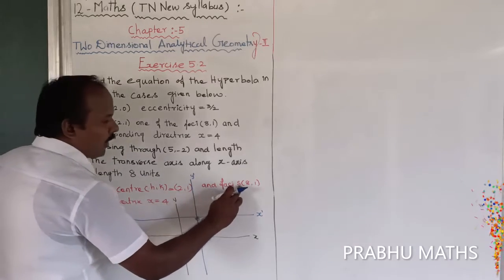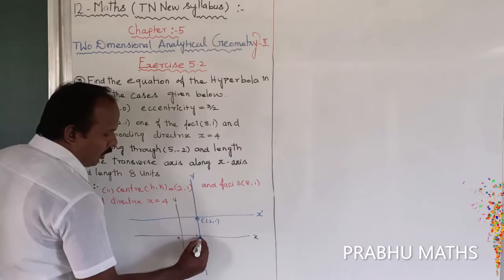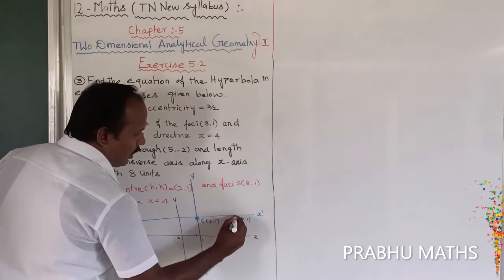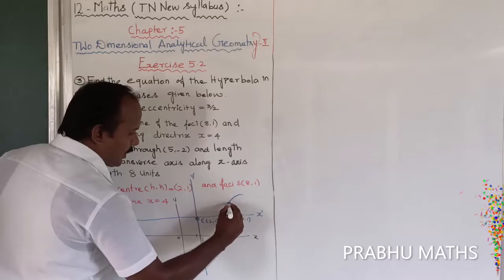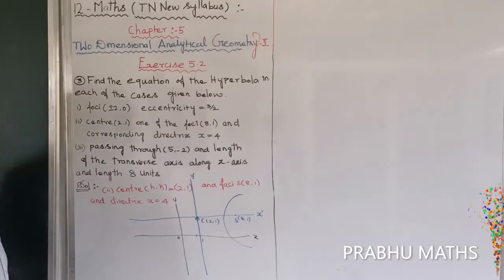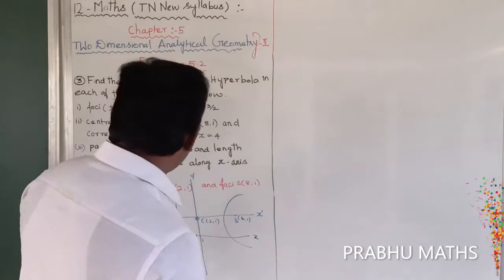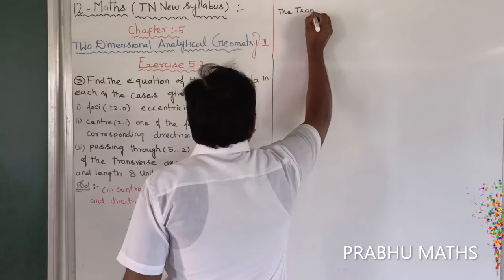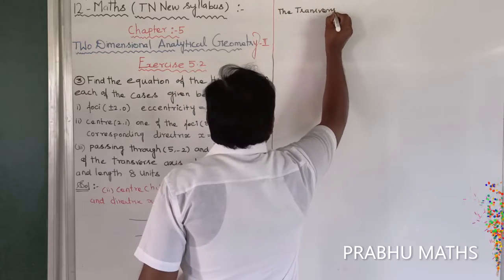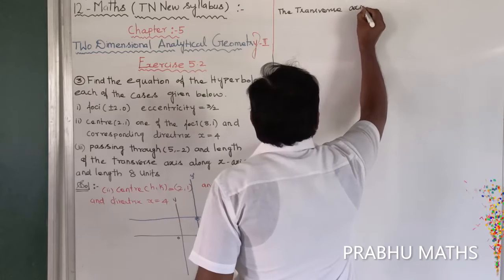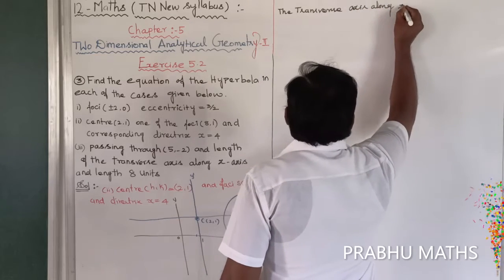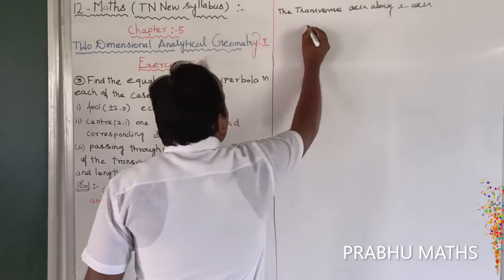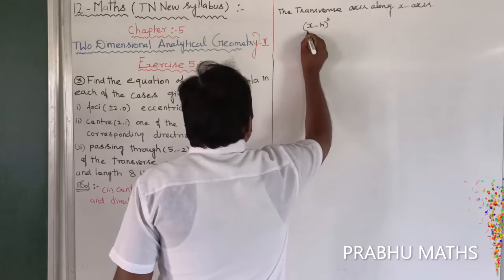The focus is at (8, 1), which is plotted on the graph. Since both the center and the focus share the same y-coordinate (y = 1), the transverse axis is along the x-axis.